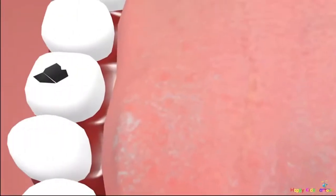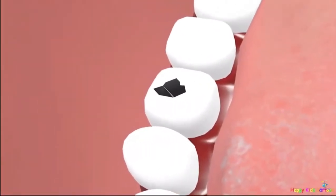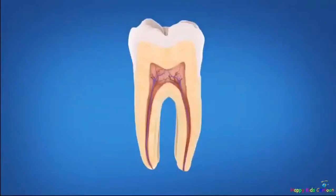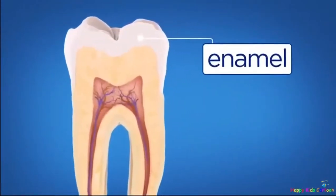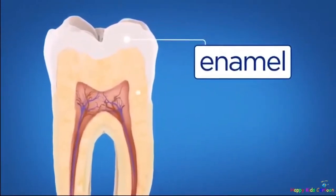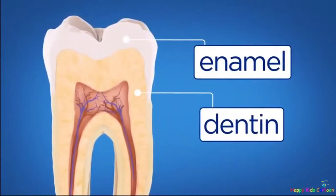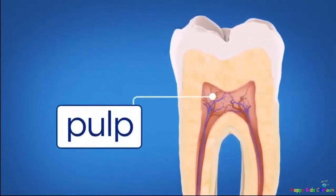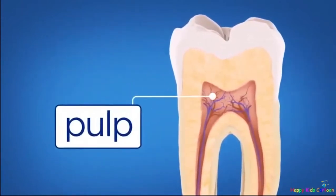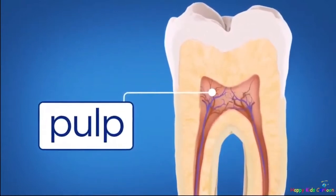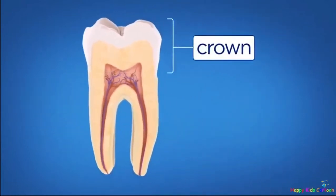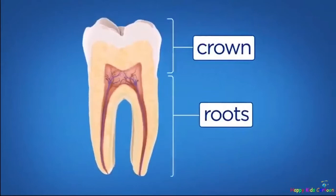Rotten teeth. Inside the tooth, under the white enamel, is a hard tissue called dentin. Inside the dentin is a soft tissue called pulp. The pulp contains the tooth's nerves and blood vessels, and it extends from the crown of the tooth into the roots of your teeth.